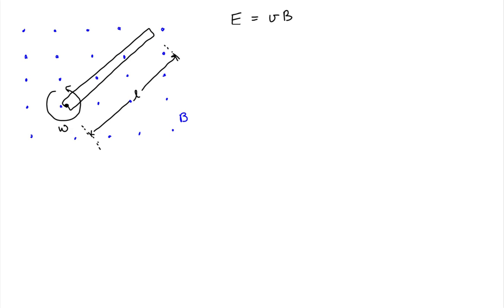The speed at any point of the conductor depends on how far away we are from the pivot point. From circular motion, we know the speed of a point on a circle equals the product of the distance that point is from the pivot point — which we'll call R — and the angular speed of rotation. Depending on R, our speed is different: zero at the pivot point and a maximum value at the end of the bar.